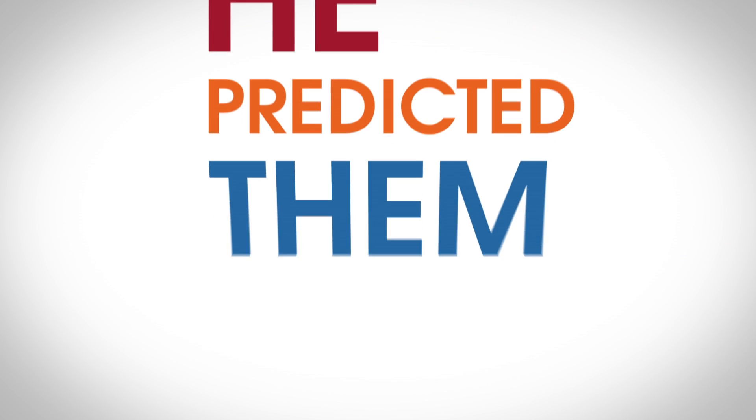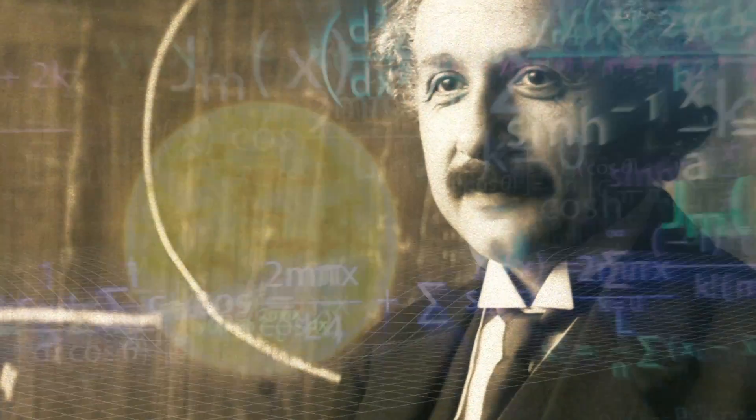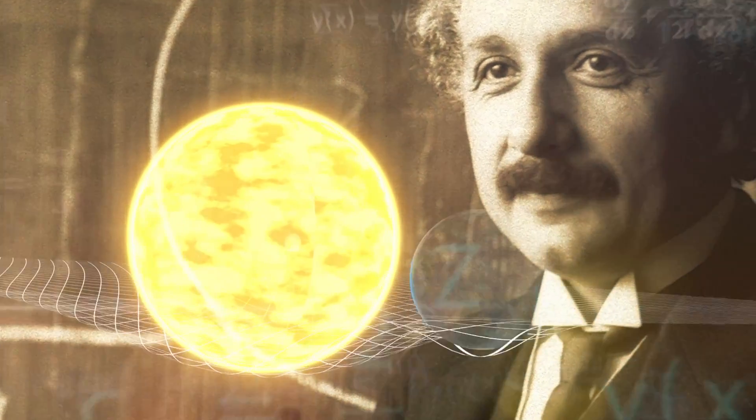Einstein really made some waves. Or at least he predicted them. When Einstein published his theory of general relativity a century ago, one of the predictions in that theory was something called gravitational waves.